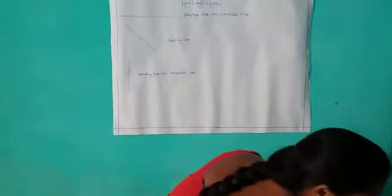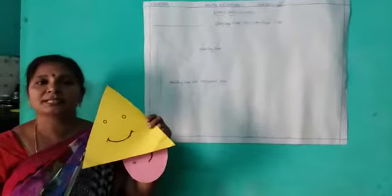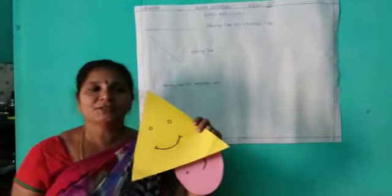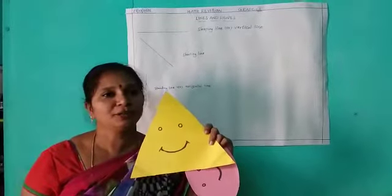Now, give examples for triangle. Let us see examples for triangle. What are examples for triangle? Samosa, pizza piece, and watermelon piece. We are observing every day.